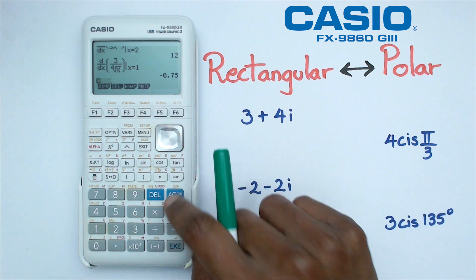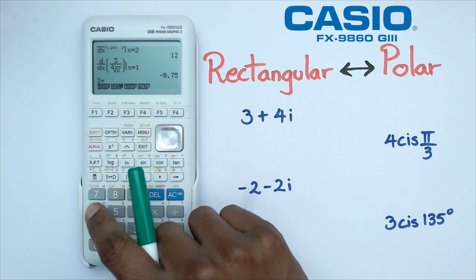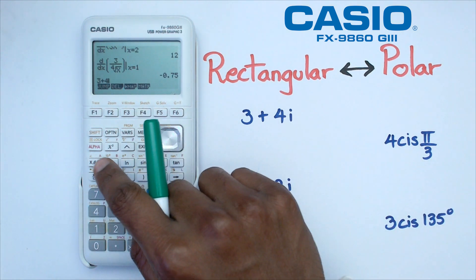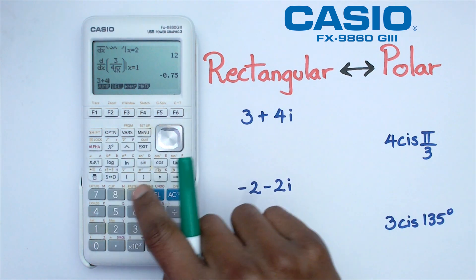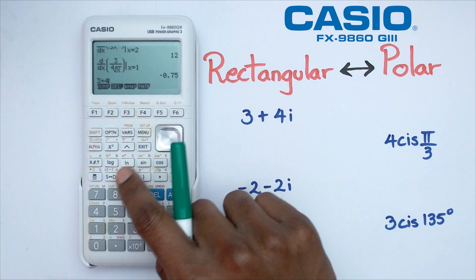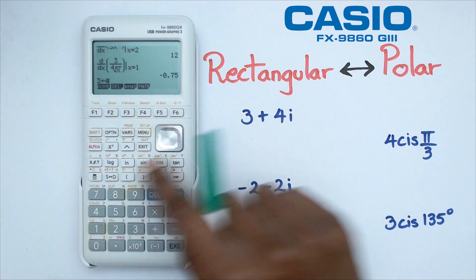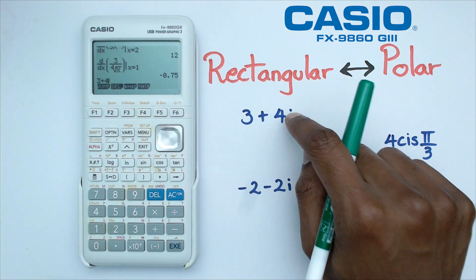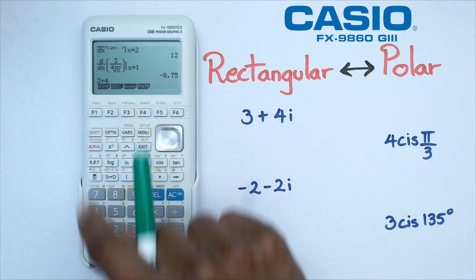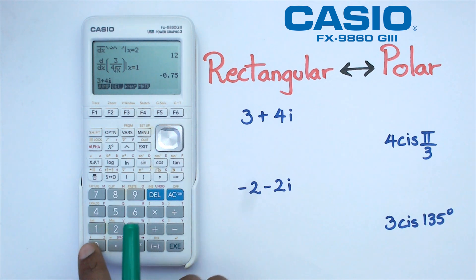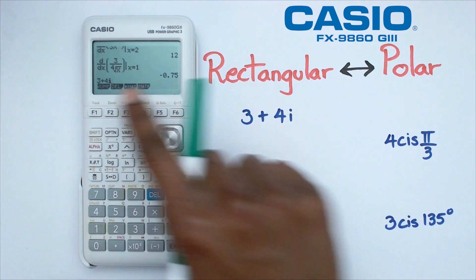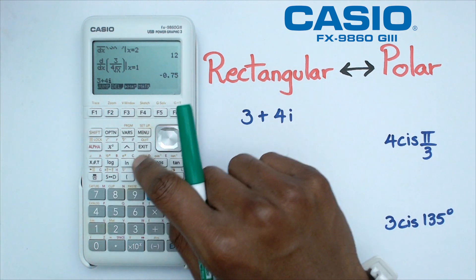Now all I need to do is put in 3 plus 4i, so I'm going to go 3 plus 4 and the i. Make sure that you don't use alpha and the bracket, because that's the actual i variable, but what we want is the complex i. To do that we're going to click on shift 0, and as you can see shift 0 is where the complex number i is.